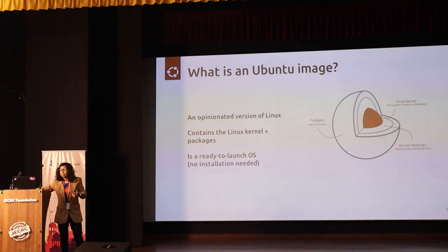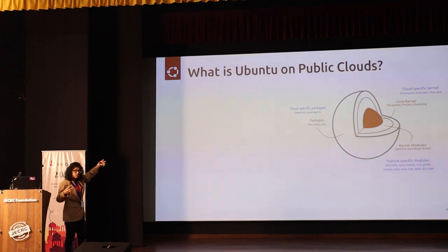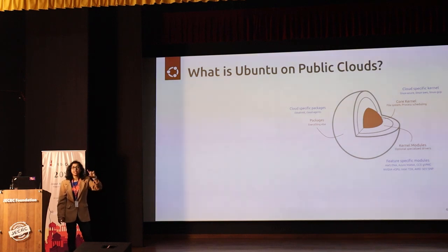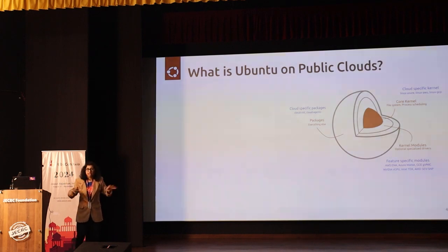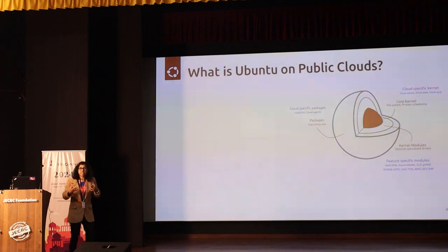How is Ubuntu different in the public cloud? It is quite different — everything is specialized and optimized for the public cloud. The kernel still has those features, but they are specifically for Azure, AWS, or GCP. There are specific kernels and specific kernel modules applicable for each cloud. Those clouds have their own networking, their own set of hardware, and their own features that need to be supported. All those specialized hardware modules come as feature-specific modules. That's what goes into this optimized image of Ubuntu.